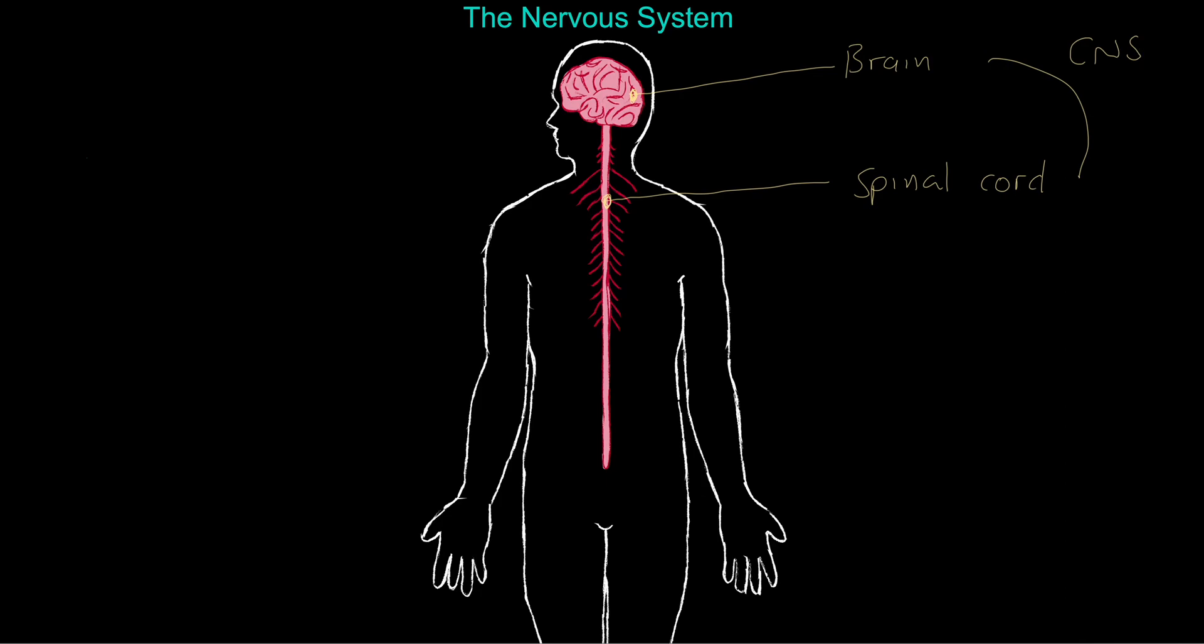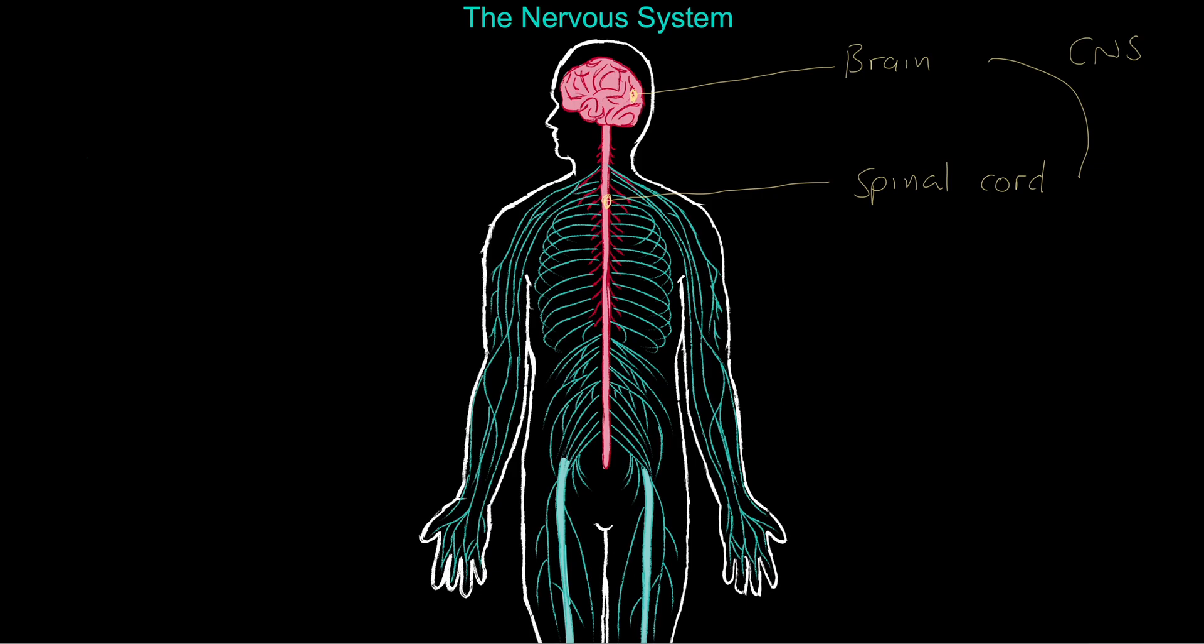We also have what is referred to now as the PNS. Now, let me change color here. This here is the PNS. Now, I will write this one out for you because it's a little more detailed. This is the peripheral nervous system.